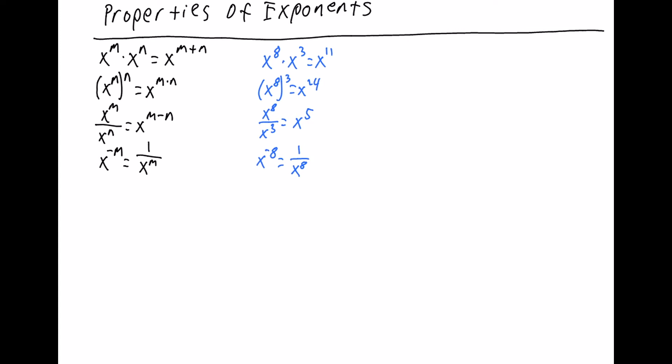Next, when you raise a variable to a negative exponent, you bring it down to the bottom of the fraction. If there's no fraction, you just do 1 over and bring it to the bottom. So x to the negative 8 would be 1 over x to the 8. Just to note — back with the dividing — if the bigger number is on bottom instead of on top, so if it's 3 on top and 8 on bottom, that would give you x to the negative 5, which would be 1 over x to the 5. So whenever you do division, if the bottom exponent is bigger, then that stays on bottom.